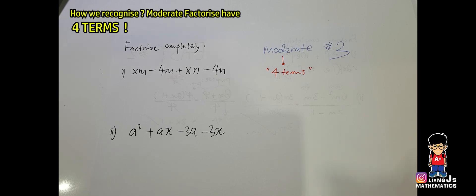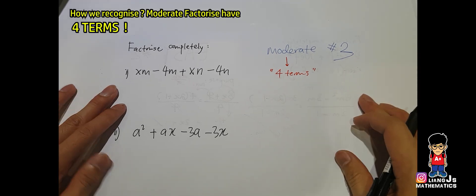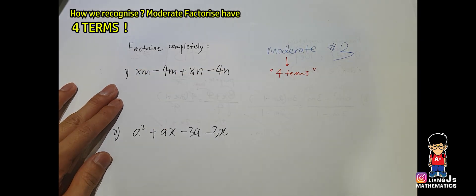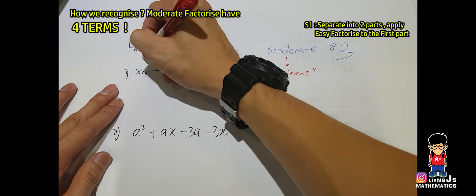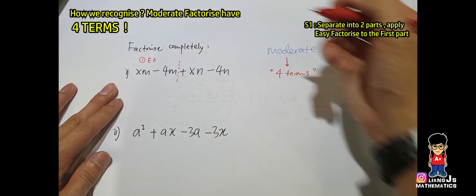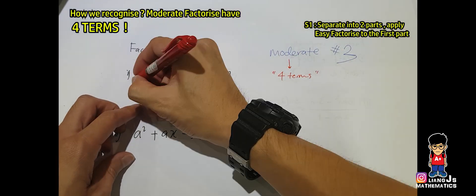Now I will clarify everything using this video. Four terms, in order to apply moderate factorization, we have to first cut it off, apply easy factorization over here where m repeats. You pull the m, x minus 4 put it inside.